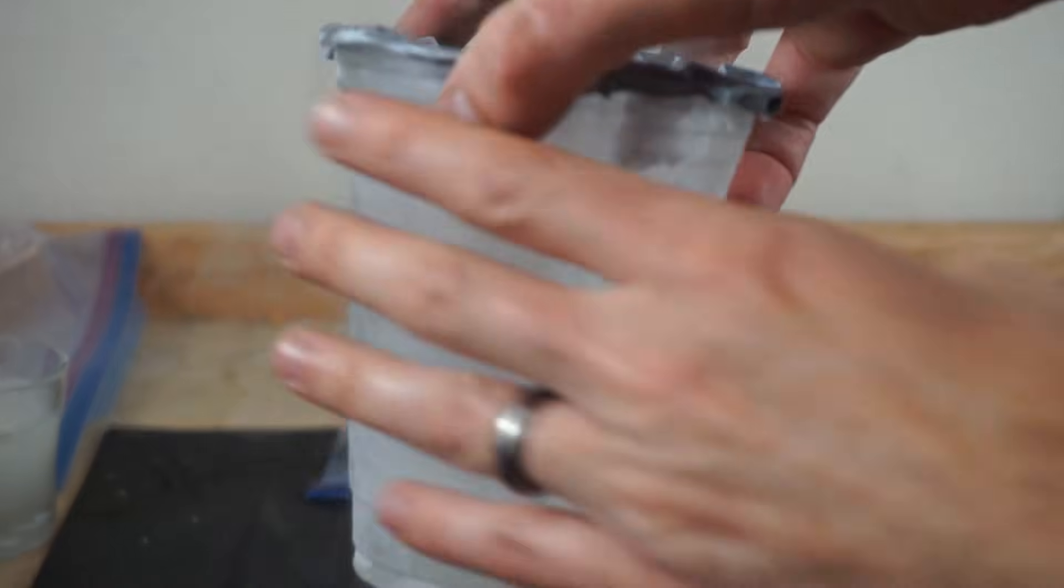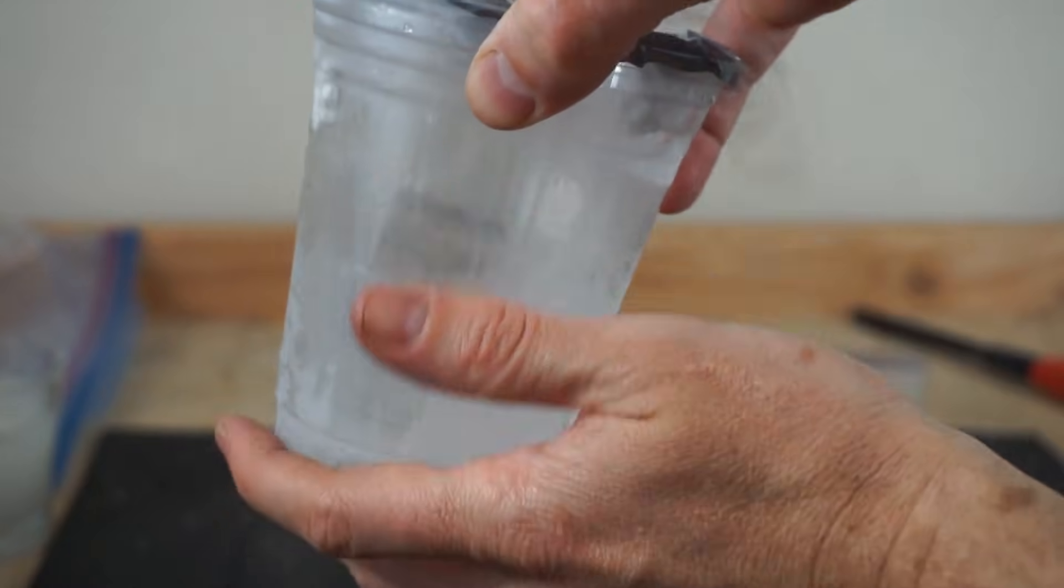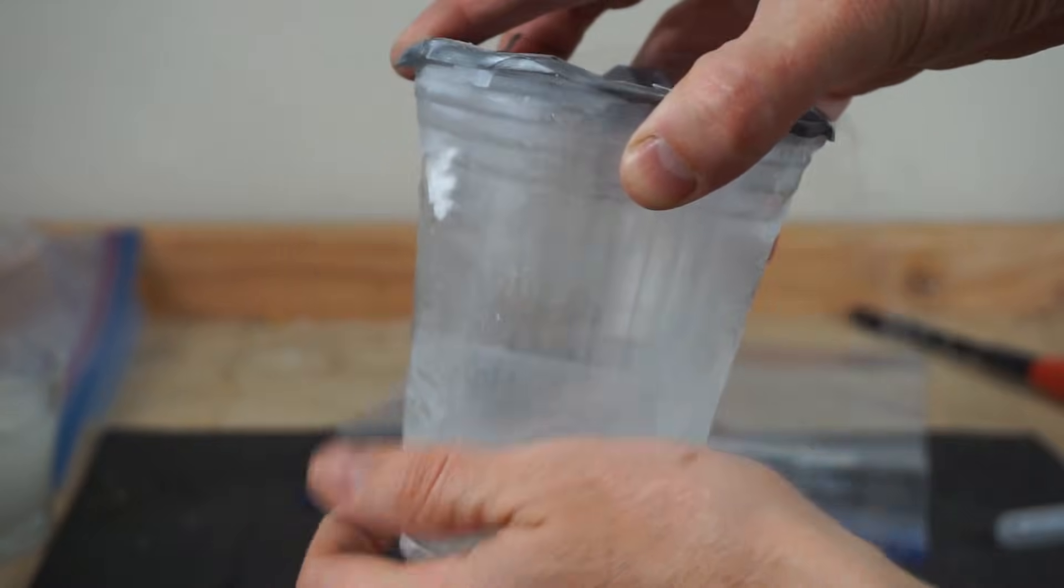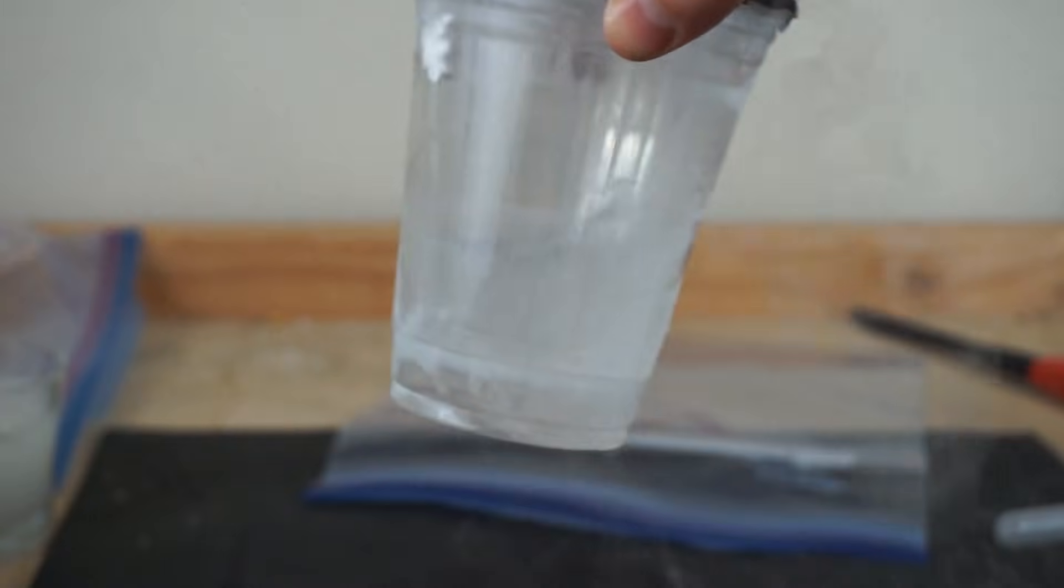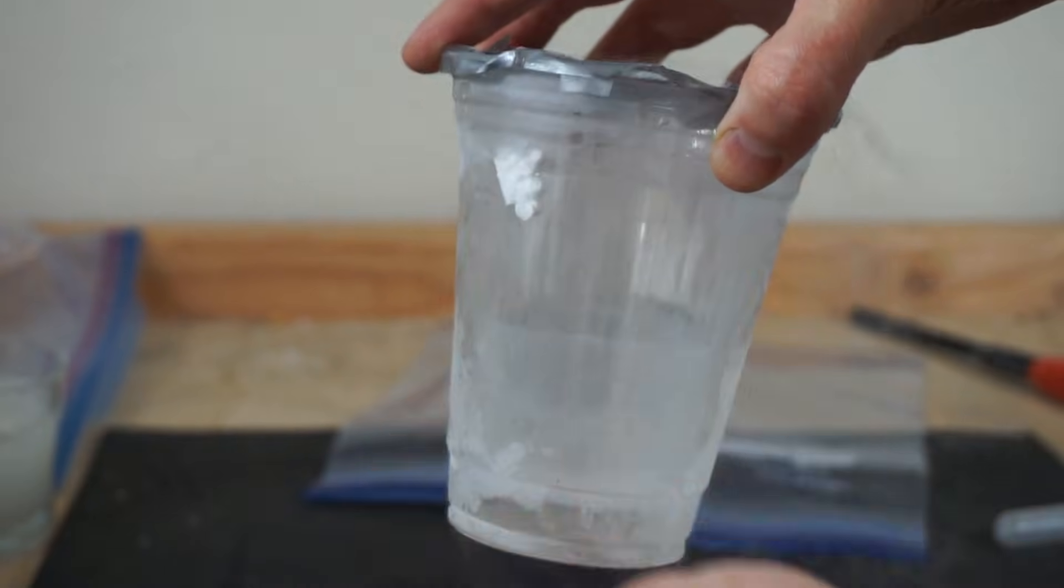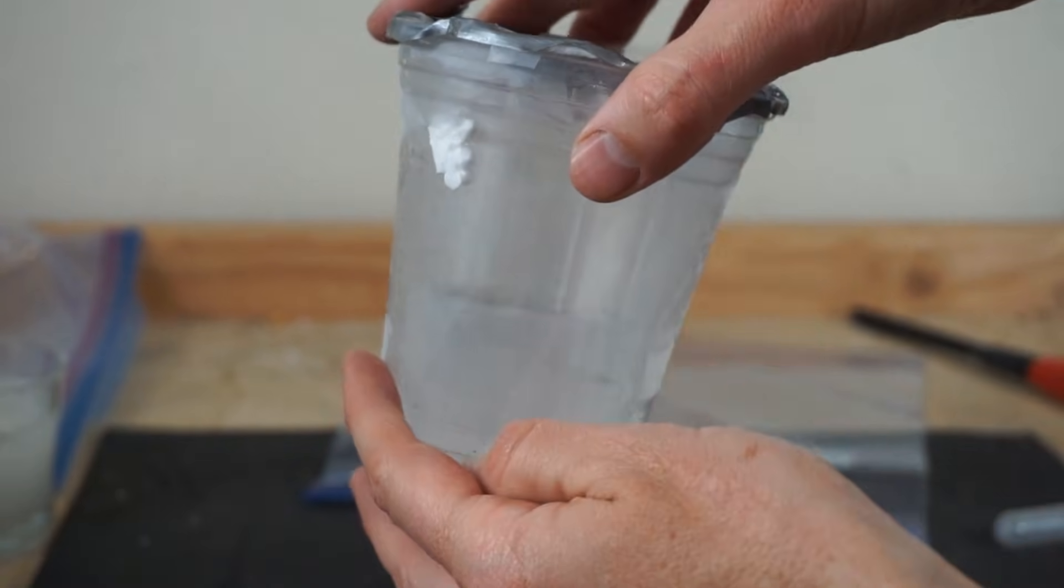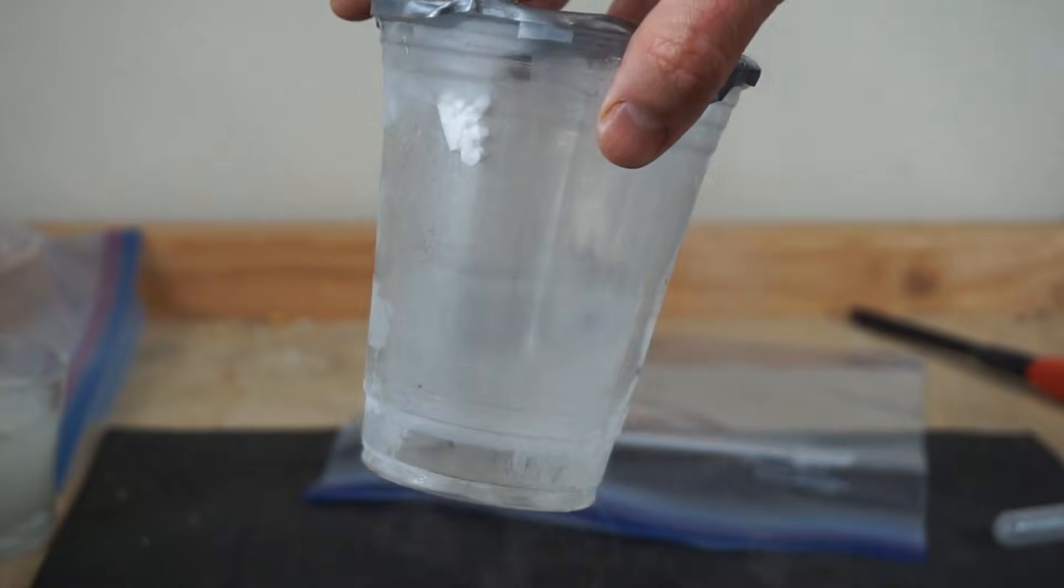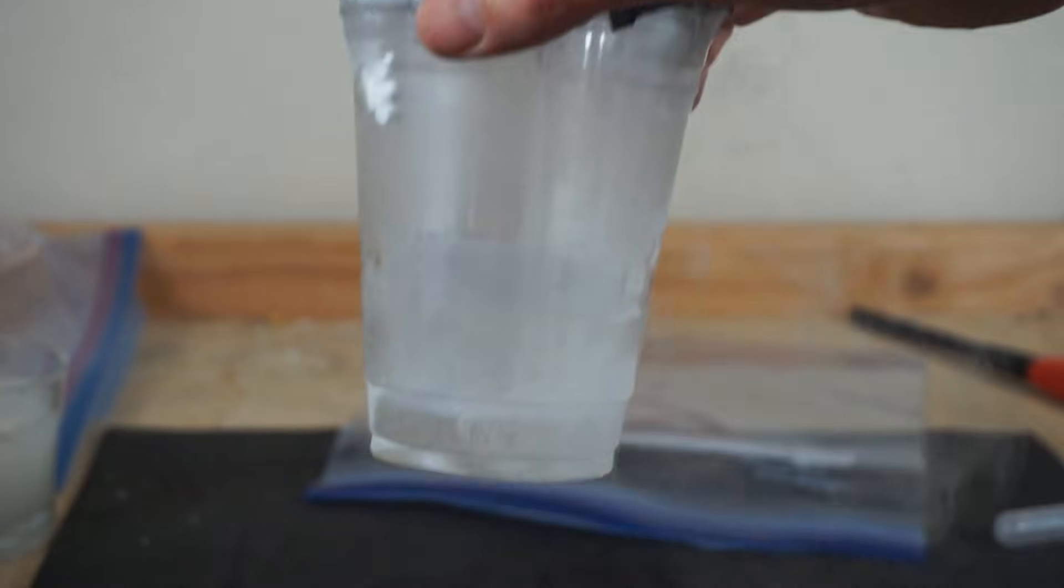So liquid nitrogen boils at around negative 196 Celsius, but liquid oxygen boils at negative 183 degrees Celsius. And so what that means is that you can liquefy oxygen using liquid nitrogen.